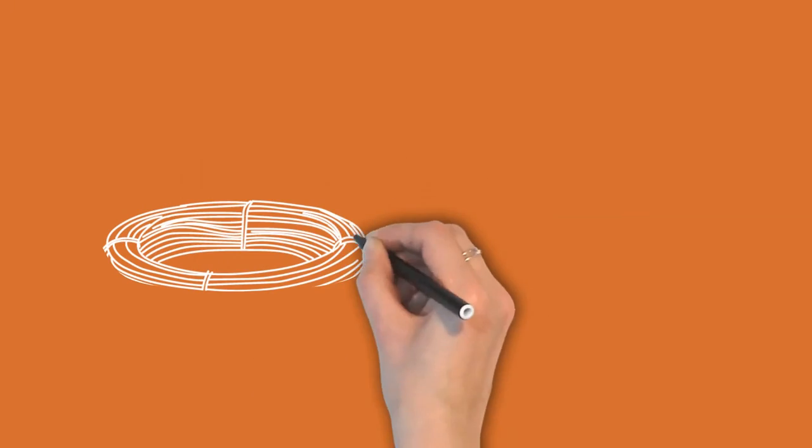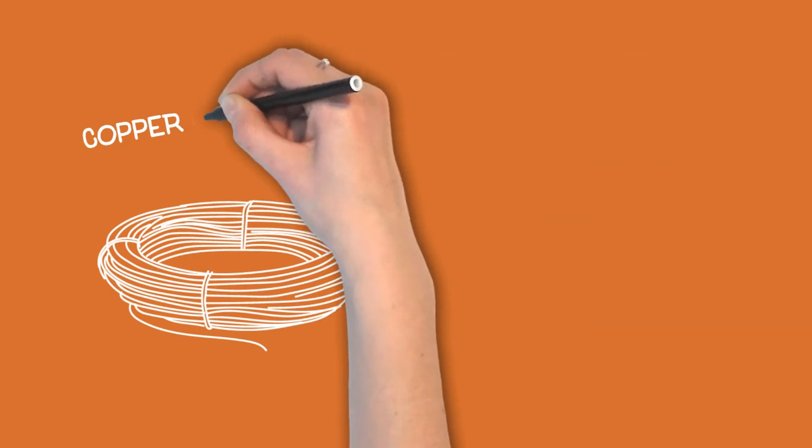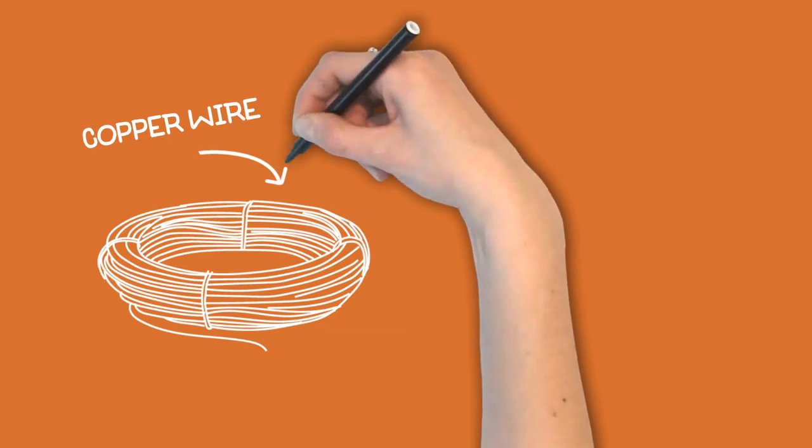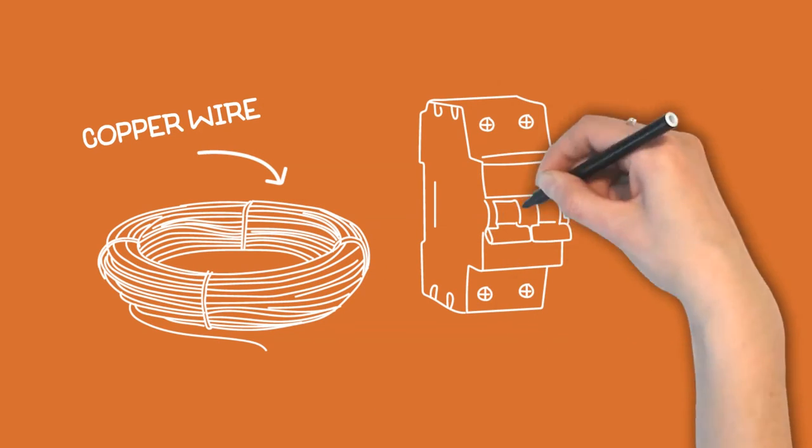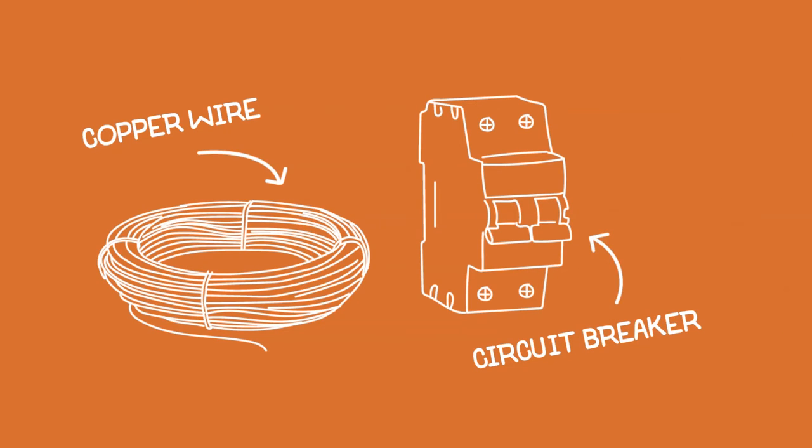Each kiln model will require a licensed electrician to install a receptacle that matches the plug on your kiln. The electrician will need to know the amperage rating of the kiln and plug type in order to install the correct wire gauge, receptacle and breaker. This information can be easily found on the SCUT website.